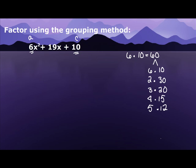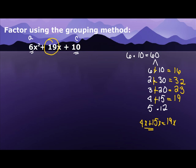Now my next step is to figure out which of those adds up to the middle number, 19. So 6 plus 10 is 16, 2 plus 30 is 32, 3 plus 20 is 23, 4 plus 15 is 19. So if I have 19x, I could say 4x plus 15x equals 19x. And this is what we're going to use.